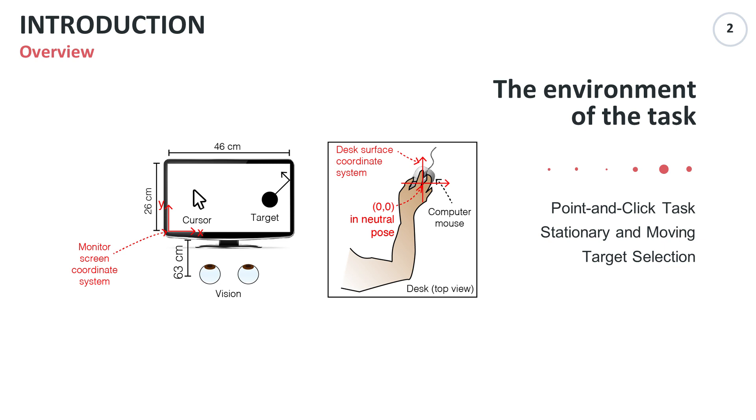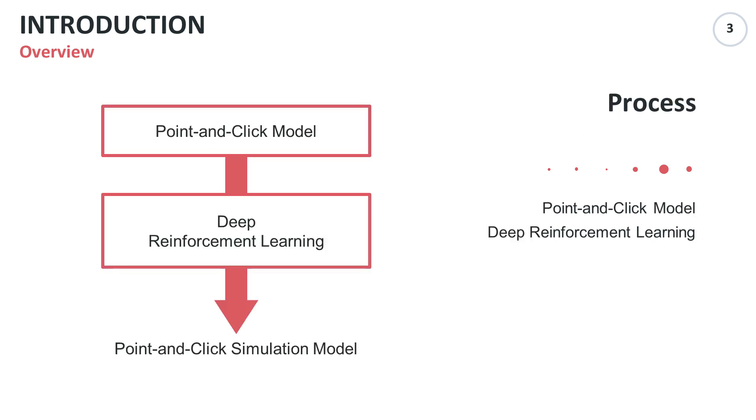We simulated mouse point-and-click behavior applicable to both stationary and moving targets. We combined five modules to create a point-and-click model which was learned through deep reinforcement learning. As a result, we proposed a simulation model that creates human-like mouse trajectory and click behavior.